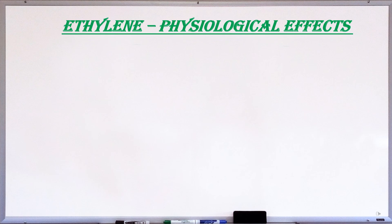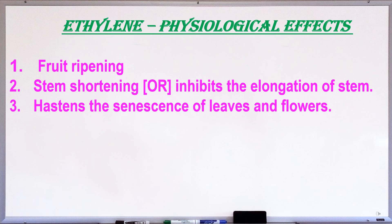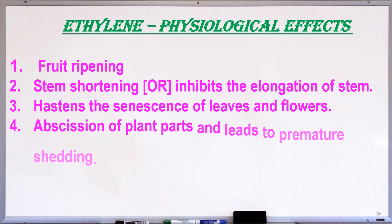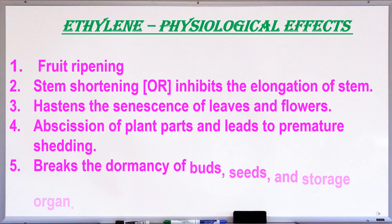The physiological effects of ethylene: Ethylene promotes the ripening of fruits. Ethylene inhibits the elongation of stem and root. Ethylene hastens the senescence of leaves and flowers — for example, leaf chlorophyll gets degraded, resulting in yellowing of the leaf and finally shedding. In flowers, it regulates early blooming. Ethylene stimulates the formation of the abscission zone in leaves, flowers and fruits, leading to premature shedding and healing of the shed zone. Finally, it breaks the dormancy of buds, seeds and storage organs.